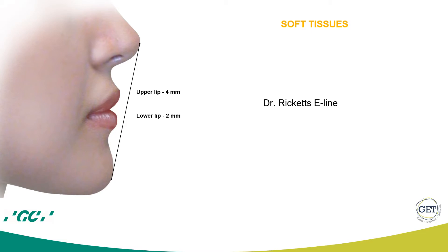In order to do this, we can use different lines, each one with some limitations. We can use the E-line proposed by Dr. Ricketts. This line runs from the tip of the nose to the soft tissue pogonion. According to Dr. Ricketts, the upper lip should be 4 mm behind and the lower lip 2 mm behind this line. The limitation is that it depends on the length of the nose. In case of a very long nose, this line is going to be placed more forward. In case of a retrognathic mandible, this line is going to come out back.